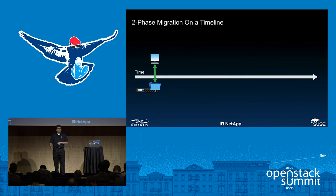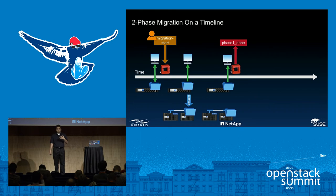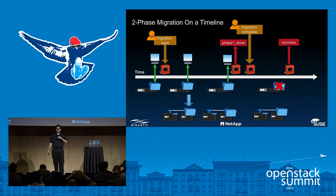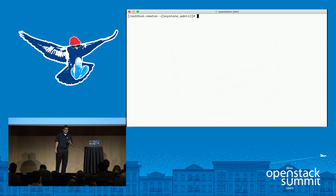On the migration timeline: the client is accessing the Manila share, the administrator issues a migration start command, and the client uses the share in read-only mode during migration. Once all data is copied, querying the OpenStack CLI will indicate 'phase one done.' The administrator then issues a migration complete command — perhaps during a scheduled downtime — the original share is deleted, and the client can access the new share.